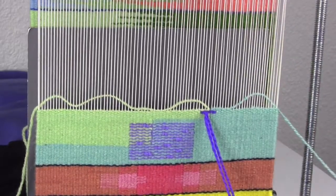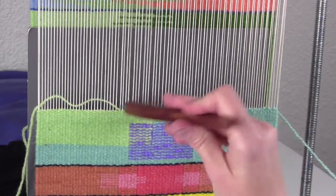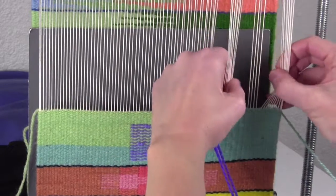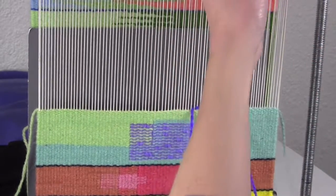As long as you are using a strong warp like cotton seine twine, pulling the warps apart in that area after every pick can help a lot and speed the process up.